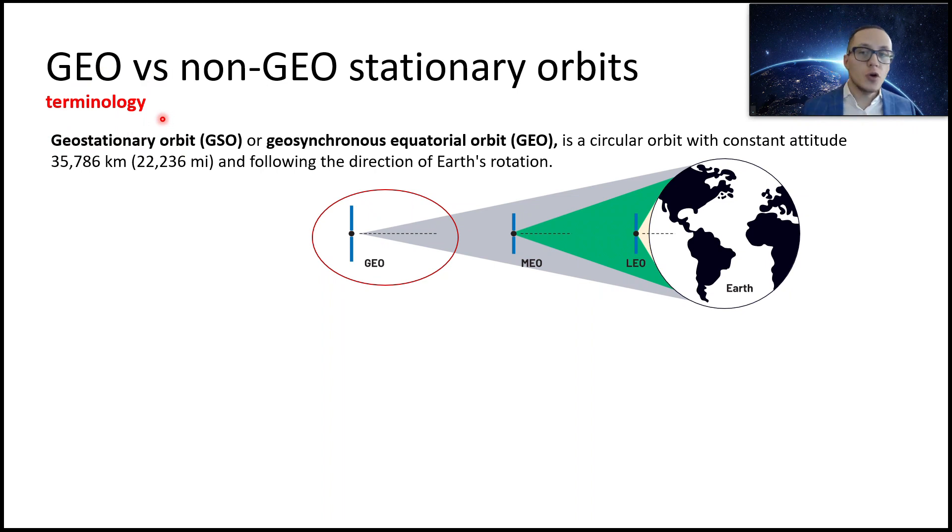Let's talk about geostationary, non-geostationary orbits. Let's talk about GEO first. We can also call it geosynchronous equatorial orbit, which is basically a circular orbit with constant altitude. It means that satellite in the constant altitude from the earth.